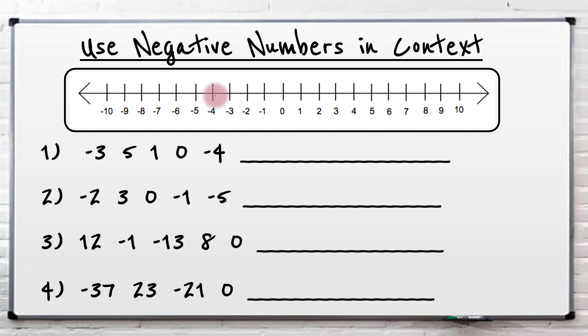So negative numbers, what are negative numbers? Put it simply, negative numbers are numbers that are below zero. If you've got zero and you take away one, you'd have minus one, then minus two, and so on.